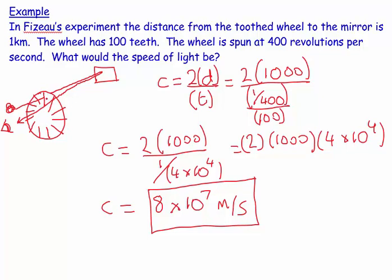If I spin at 1 turn a second with 1 gap, that would be 1 second. If I did 2 turns a second, then that would be 1 over 2 seconds. If I did 400 turns a second, it's 1 over 400. And then clearly if I have more gaps because I have more teeth, then I have shorter time intervals. I have 100 gaps, so that's 100th of the time.